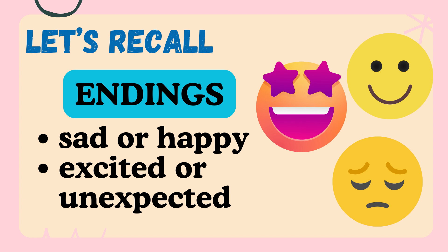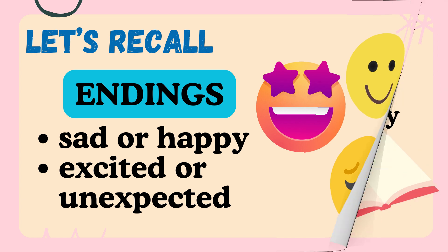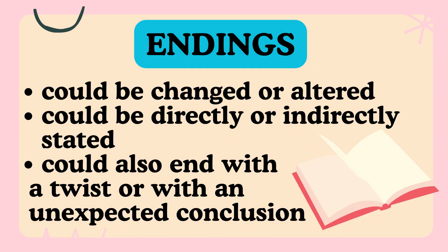Let's recall. Most of the stories you have read or listened to have different endings. Sometimes the endings are happy or sad. They could be exciting or unexpected. However, you could alter or change the ending by providing another one. You could base your ending on the plot or the events in the story. The ending could be directly stated — meaning it is mentioned in the story and is part of it. It could also be implied or indirectly stated, meaning the ending is not written in the story and the reader is left to provide it. It could also end with a twist or an unexpected conclusion from the usual or expected ending.